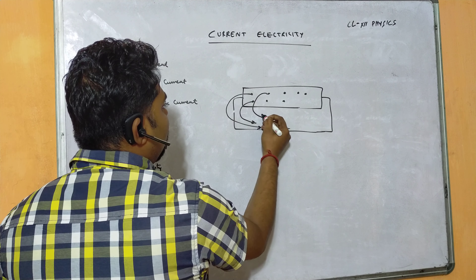An important board-level question is the derivation of the relation between current I and drift velocity Vd. The expression is I = NeAVd. To derive this: consider a conductor of length L and area of cross-section A, with N free electrons per unit volume. The volume of the conductor is A × L (in meter cubed).